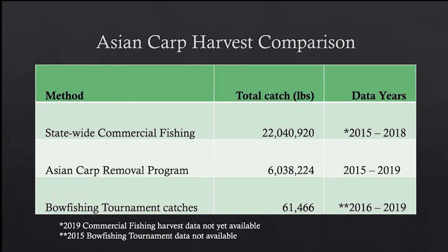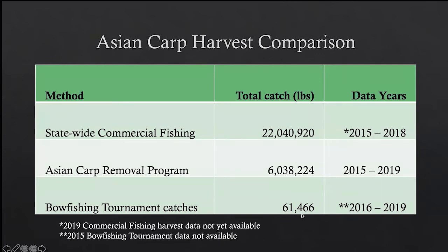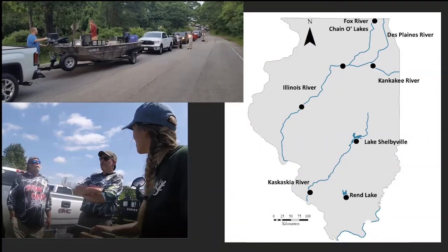To put this in scale: those Illinois tournaments harvested about 61,000 pounds of fish. The Fish and Wildlife Service and Illinois DNR together remove about 6 million pounds of Asian carp per year through electrofishing and netting, and Illinois' commercial fishing operation harvests about 22 million pounds over about a four-year span. So bow fishing tournaments aren't making a huge dent in invasive species management, but they are a small contributor.